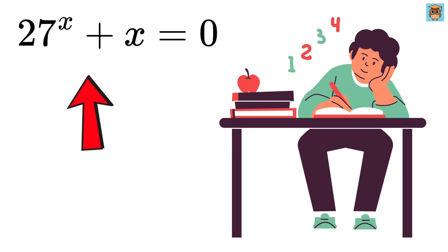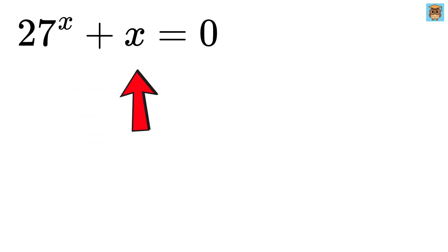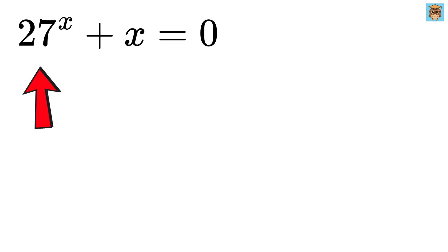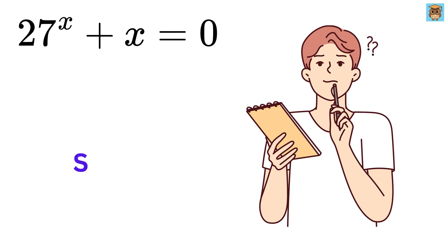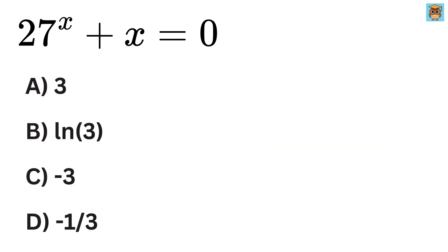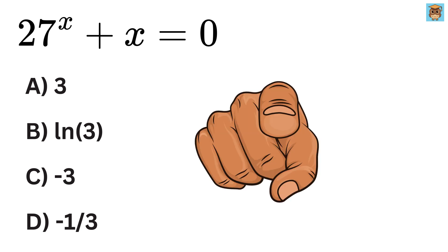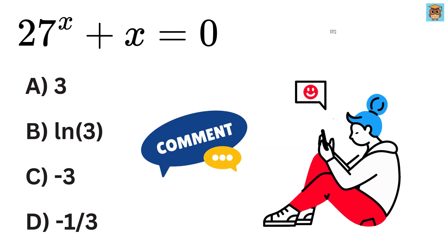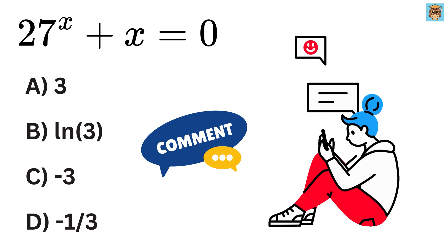Today, we will be solving this amazing exponential equation. We are given (x + 27) raised to the power of x equals 0. Our job is to find the value of x. We are also given four options, out of which one is correct. Can you solve it? If you know how to solve it, you can write it down in the comments.